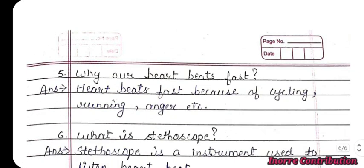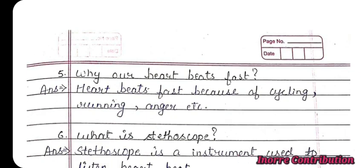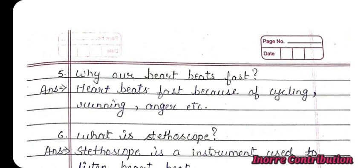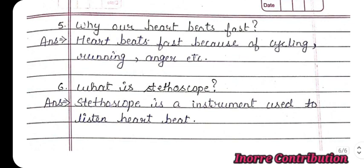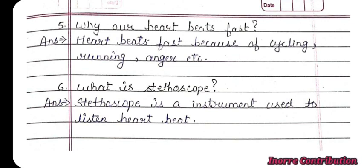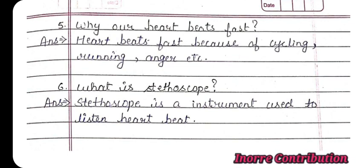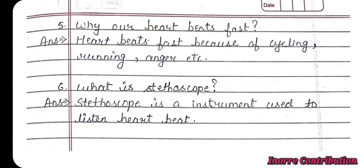Fifth question: why does our heart beat fast? Answer: the heart beats fast because of cycling, running, and anger. What is a stethoscope? A stethoscope is an instrument used to listen to the heartbeat.